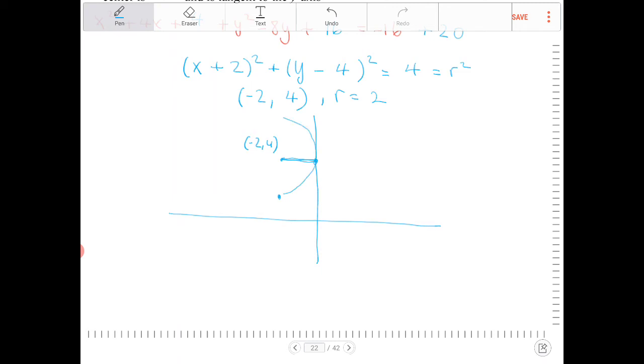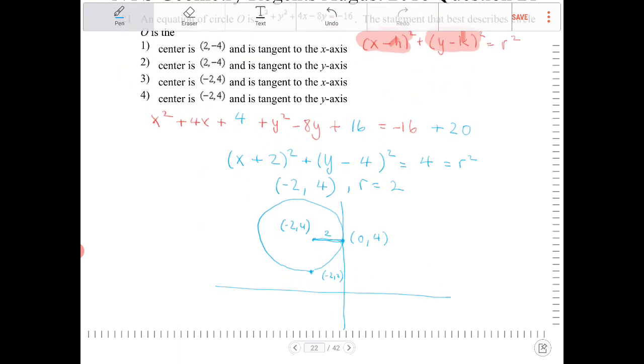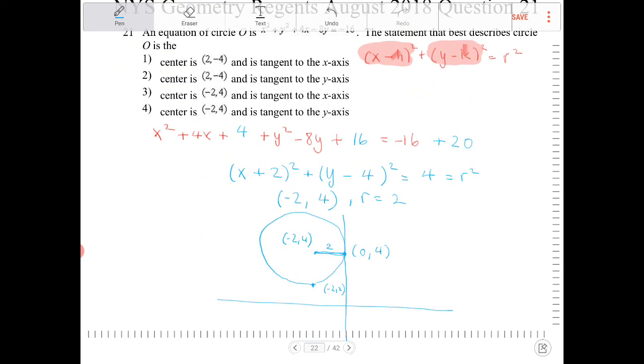So the circle is going to go around like that. The lowest point over here is going to be negative 2, 2. And the point over here is going to be 0, 4. This is a distance of 2. So it's going to be tangent to the y-axis. So which option is that? So that would be option 4.